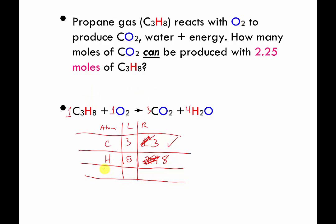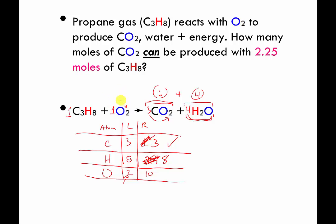The only remaining element is oxygen. On the left, one times two gives two oxygens. On the right, oxygens appear in two different molecules: three times two gives six oxygens in CO2, and four times one gives four oxygens in H2O — a total of ten oxygens on the right. We have only two on the left, so we change that coefficient to five. Five times two equals ten — balanced.